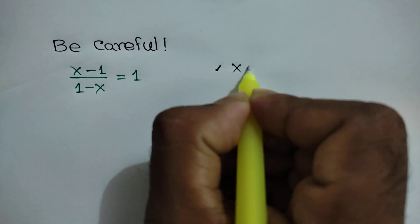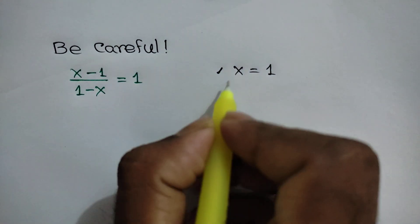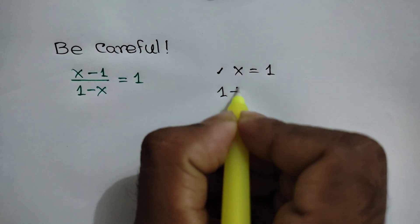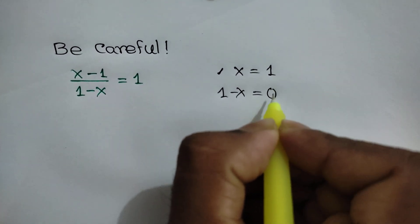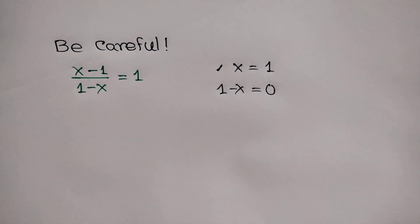Here, if x is equal to 1, then this denominator 1 minus x is equal to 0. But we cannot divide by 0, so x not equal to 1.